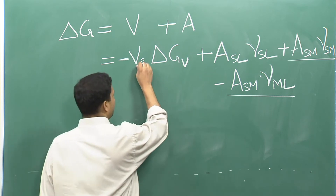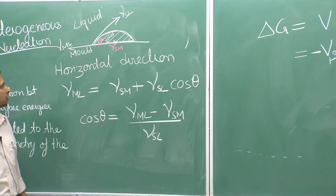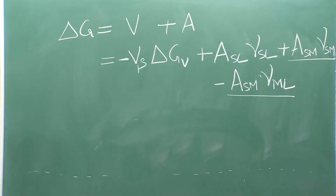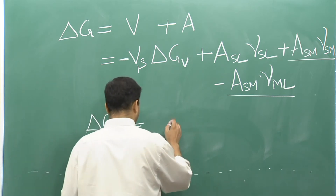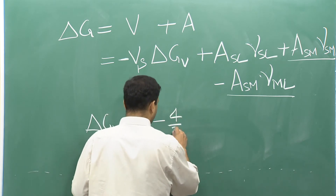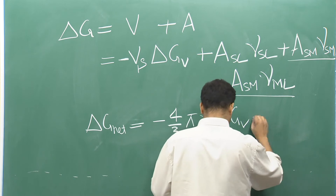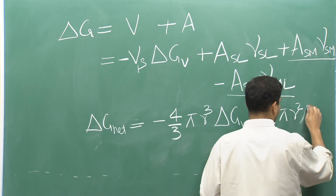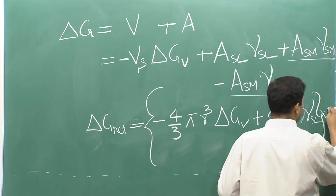When you substitute the geometry factor for the spherical cap volume V_S (expressed in terms of θ), and express γ_ML and γ_SM in terms of θ, the ΔG for heterogeneous nucleation reduces to a very simple equation: the homogeneous ΔG form multiplied by S(θ), where S is a function of θ.